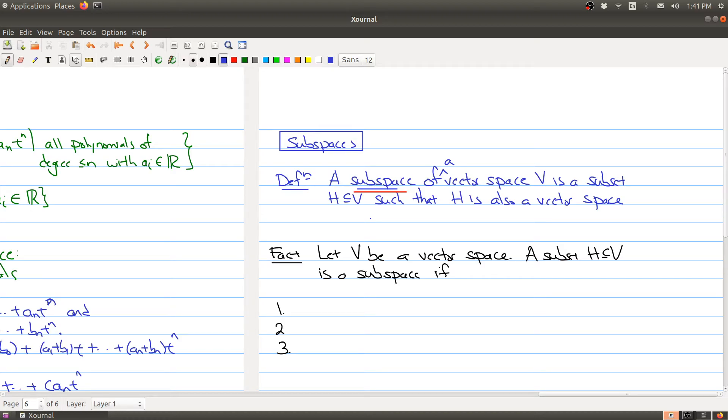Now it looks like if I were to ask you to check whether something is a vector space, you would have to go back to that long list of axioms and check that H satisfies all those properties. But it's actually not the case.